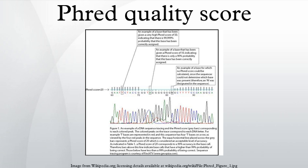Phred quality scores are defined as a property which is logarithmically related to the base calling error probabilities. For example, if Phred assigns a quality score of 30 to a base, the chances that this base is called incorrectly are 1 in 1000. The most commonly used method is to count the bases with a quality score of 20 and above.